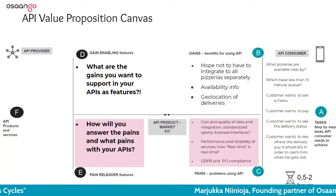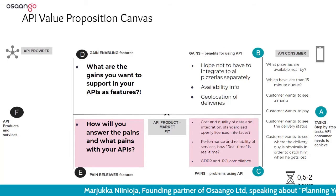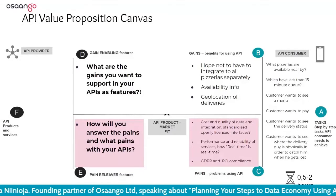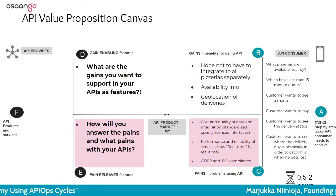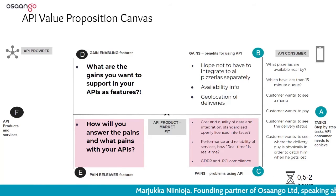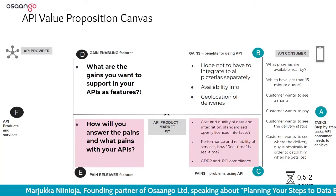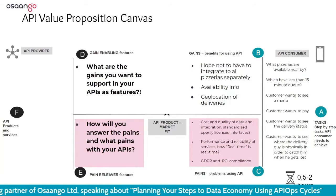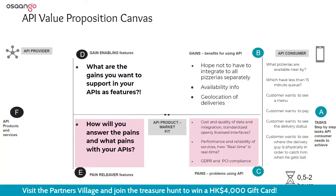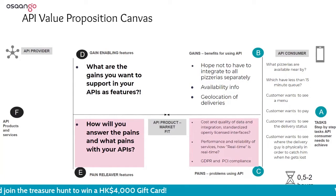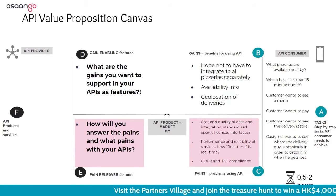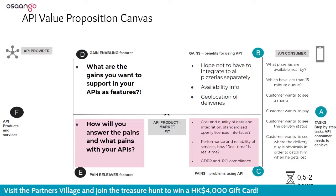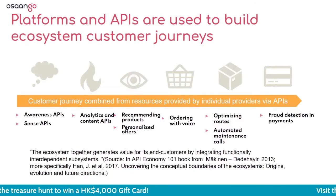Here we have an example of a pizzeria case value proposition canvas. We start with the right side of the canvas where we collected things from our customer journey. These are the jobs to be done in a customer journey. These are the things that a developer building a full-on service for this pizzeria case needs — what do they value, what do they find useful when they hope somebody would have an API for this, and what pains do they think will happen to stop or make it difficult to use the API.